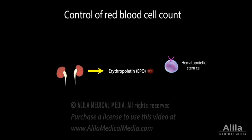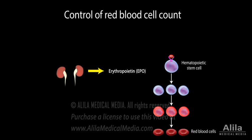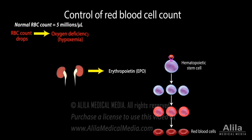The kidneys secrete erythropoietin, EPO, a stimulating factor for red blood cell formation. Low levels of EPO are constantly produced to compensate for normal blood cell turnover. When red blood cell count drops, such as during blood loss, the resulting oxygen deficiency state is detected by the kidneys, which respond by increasing their EPO secretion.